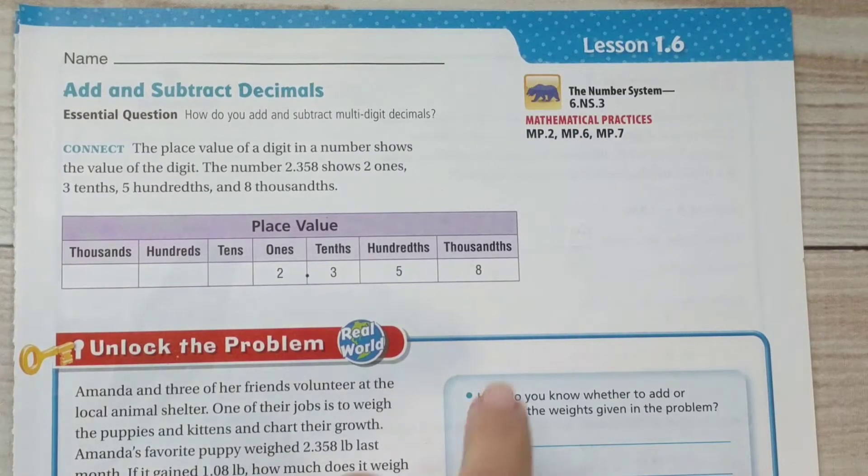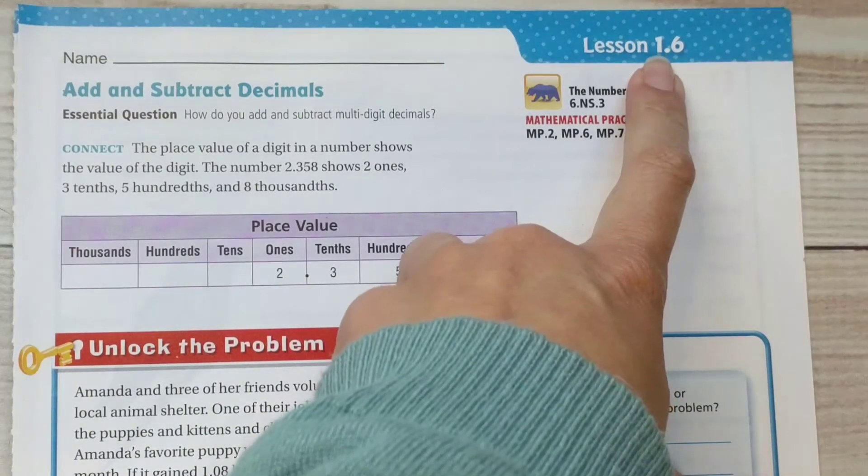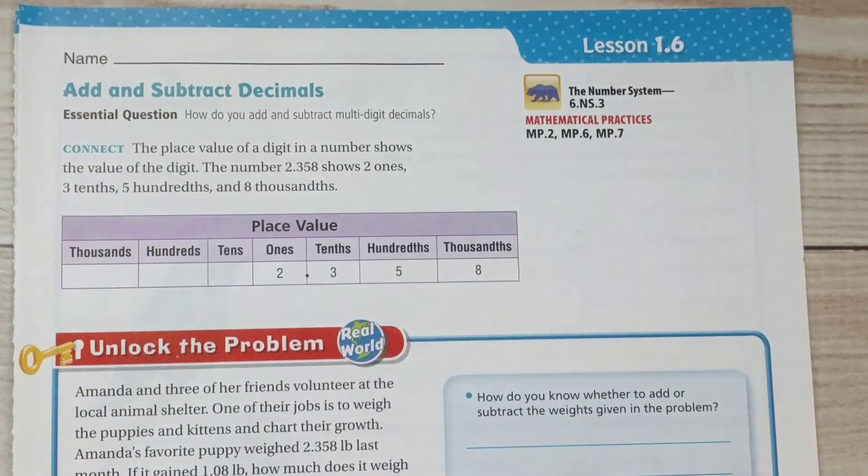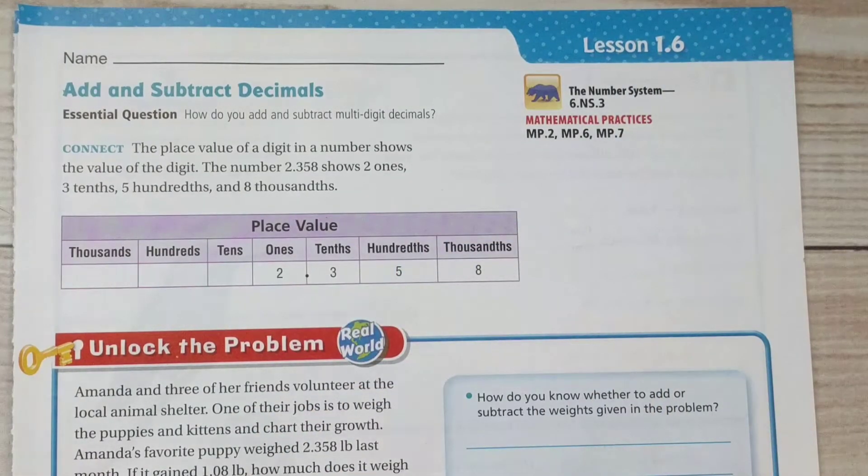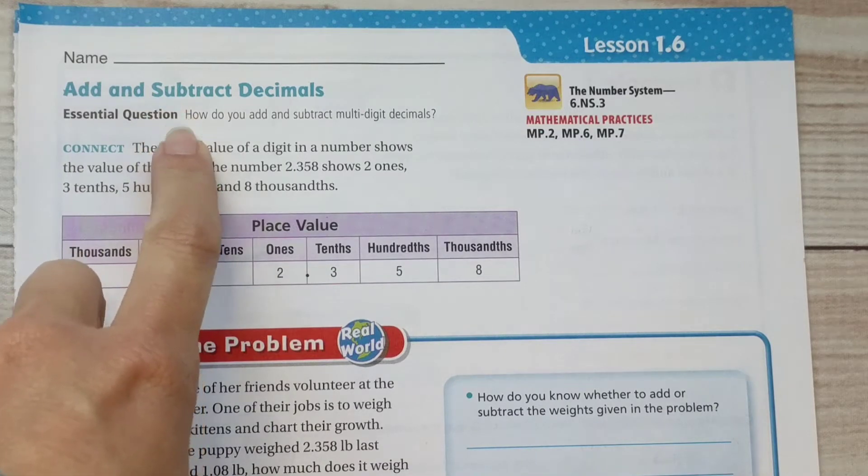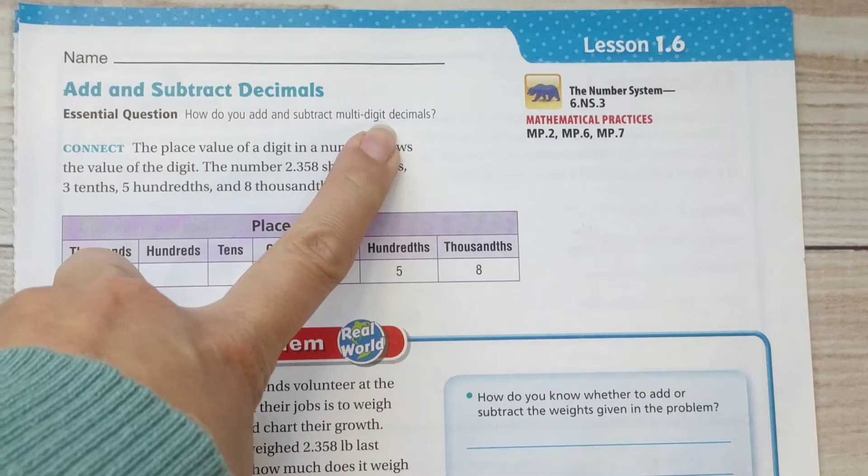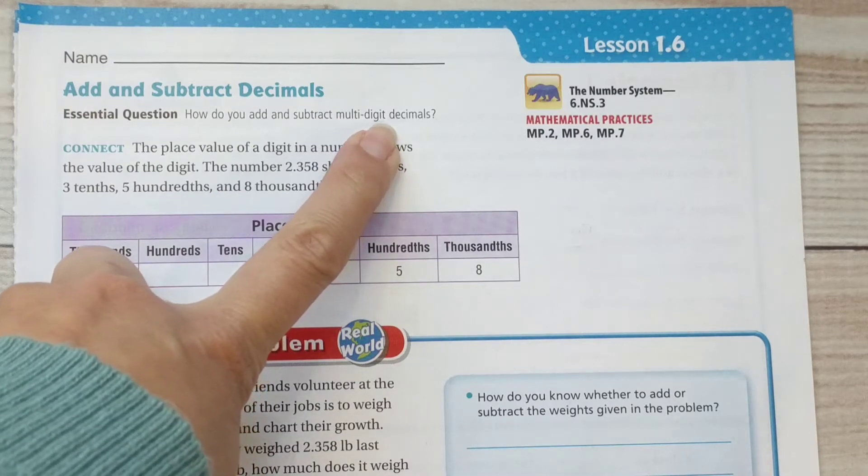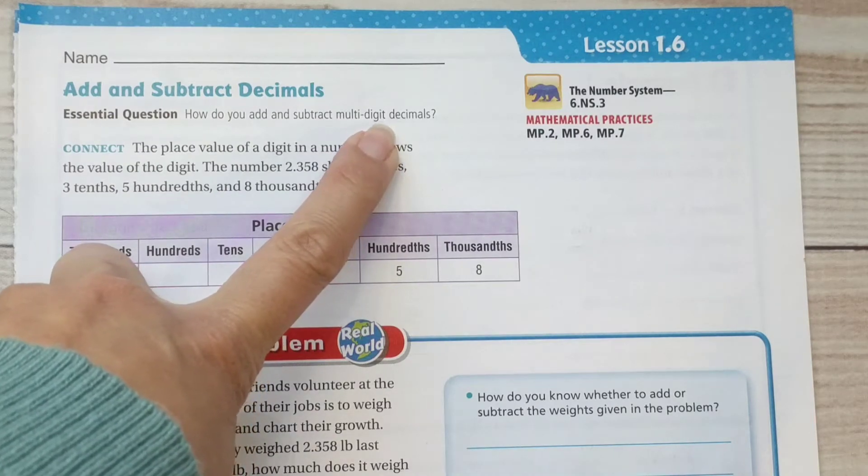Okay, today's lesson is 1.6 in your big book. We are on page 27. Today we're going to learn about adding and subtracting decimals. Our essential question: how do you add and subtract multi-digit decimals? So by the end of this lesson you'll be able to do that.